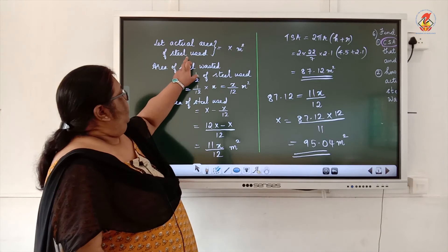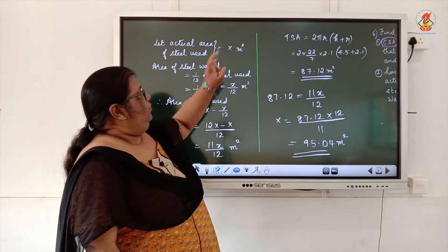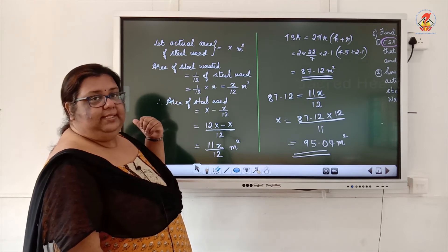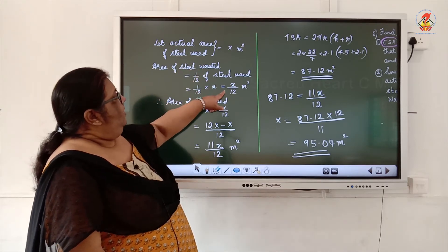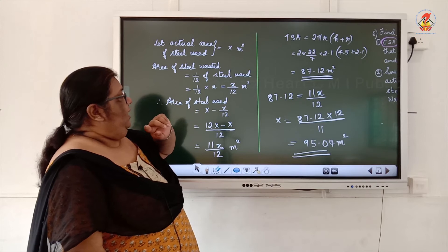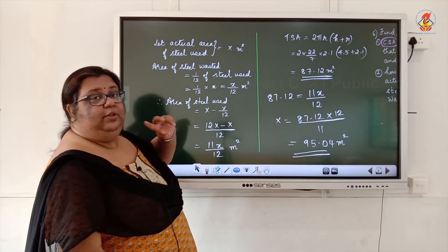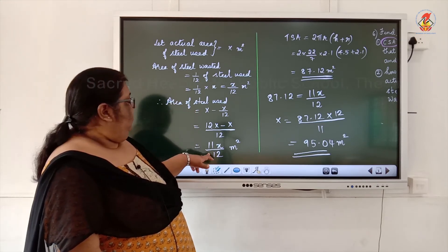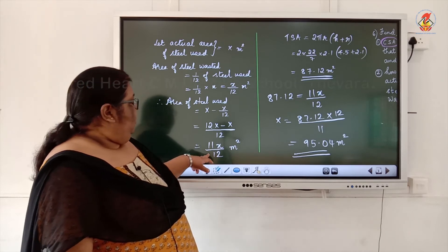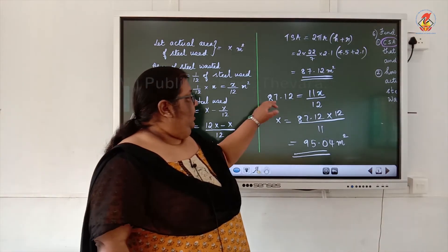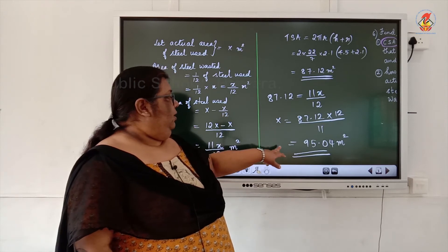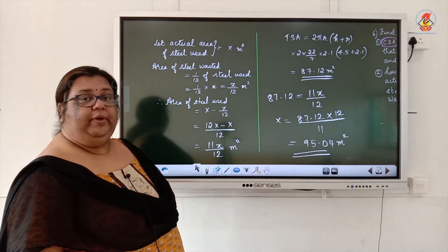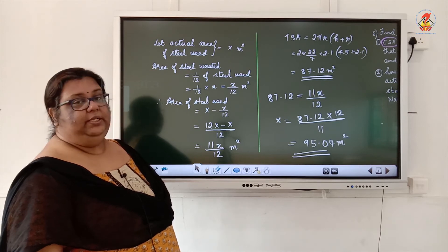Actual area of steel used = x meter square. Since x/12 of the steel was wasted, steel used for tank = 11x/12 = 87.12. Solving gives x = 95.04 meter square. So the actual area of steel used is 95.04 meter square.